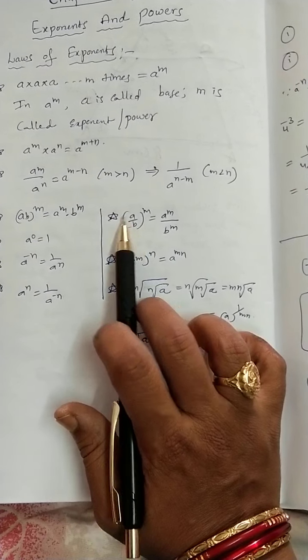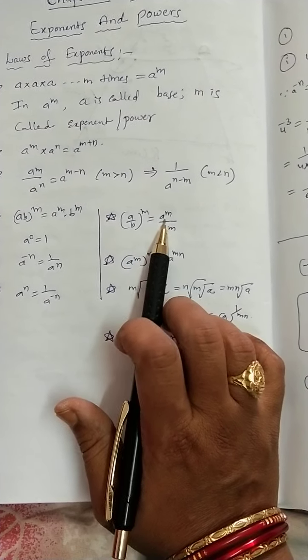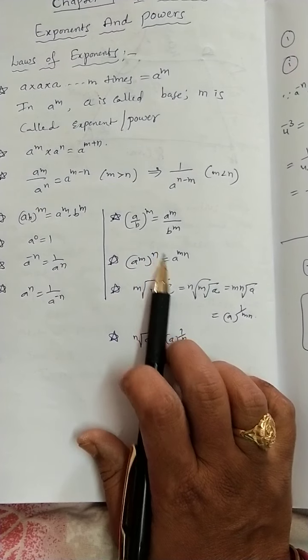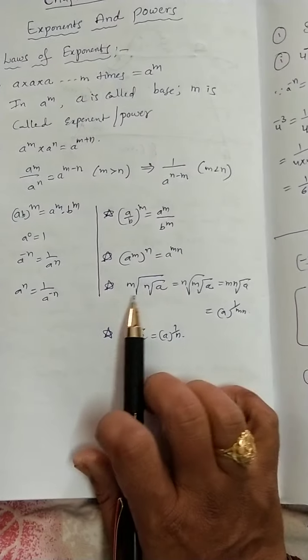Now, A by B whole power M is equal to A power M by B power M. A power M whole power N is equal to A power MN.